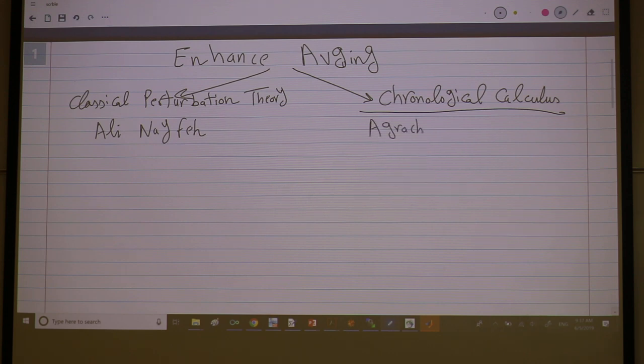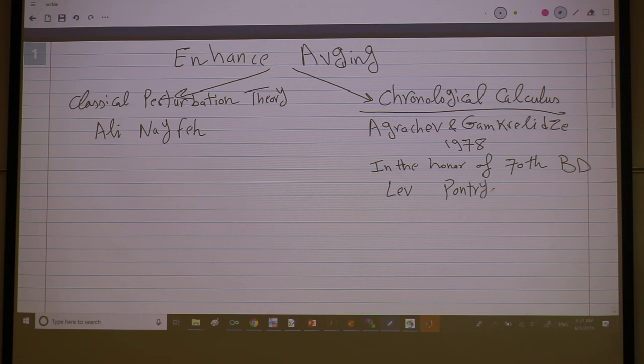It's by a paper, like I said last time, by Agrachev and Gamkrelidze, students of Pontryagin. The paper is 1978. It's a very fundamental paper, and yet it's 200 citations only so far because it's very hard to read. The paper name is Exponential Representation of Flows and Chronological Calculus. They wrote this paper in the honor of the 70th birthday of their advisor, Lev Semenovich Pontryagin, the founder of optimal control theory, one of the finest mathematicians in the century.